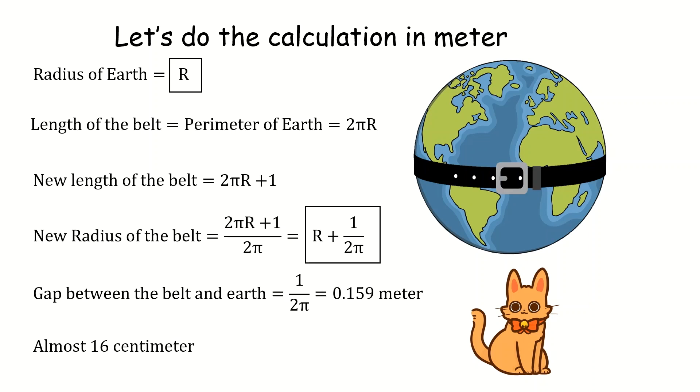What is interesting is that this answer does not depend on the value of R so it doesn't matter how big or how small this sphere is. You can do this with an orange or with the sun and you always get 16 centimeters gap.